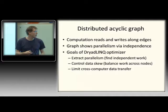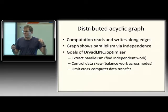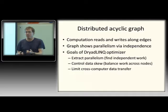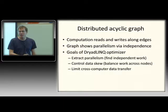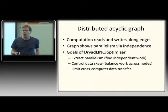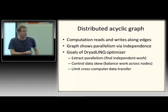The goals of the DryadLINQ system, given the program you wrote with LINQ statements, are: first, to extract parallelism by finding independent computations that don't interact; second, to help control data skew and balance work across nodes — useful both for throughput and for ensuring you don't exhaust memory on any one computer; third, to limit the amount of data transferred between computers, assuming the network will be a bottleneck. Wherever possible, you want to do work locally on the computer where the data already is.